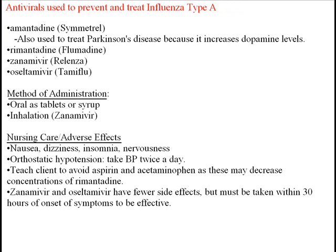Now we move on to antivirals used to prevent and treat influenza type A. Drugs in this category include amantadine, which is also used to treat Parkinson's disease because it increases dopamine levels. There's also rimantadine, rilazol, and Tamiflu. These drugs are often given orally as tablet or syrup, or zanamivir can be inhaled. Watch for nausea, dizziness, insomnia, and nervousness. Check blood pressure twice a day for orthostatic hypotension. Teach clients to avoid aspirin and acetaminophen as these may decrease the concentration of amantadine. Zanamivir and oseltamivir have fewer side effects but must be taken within 30 hours of onset of symptoms to be effective.